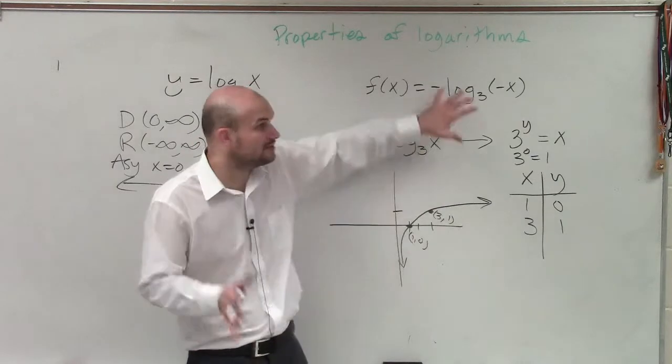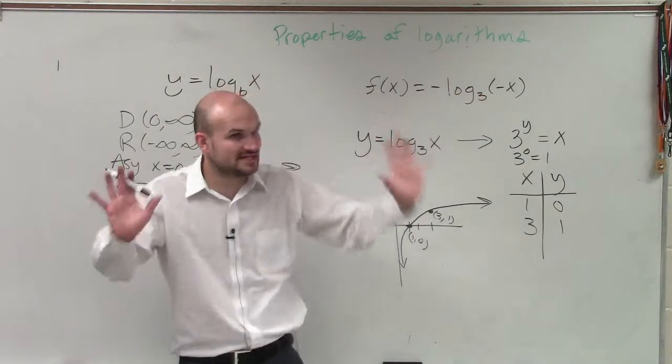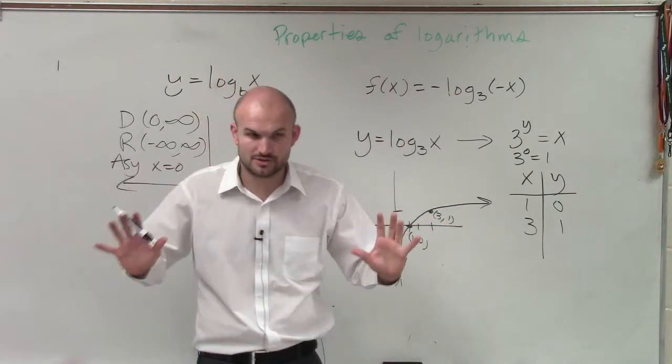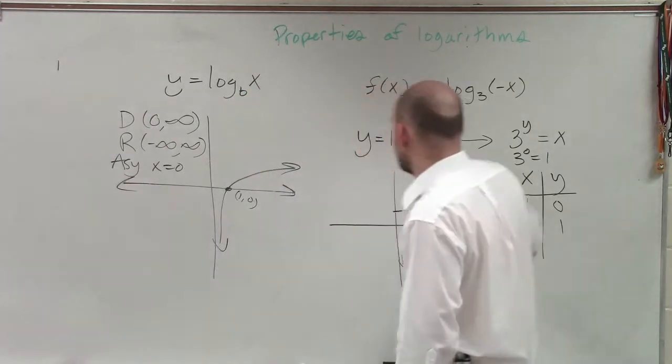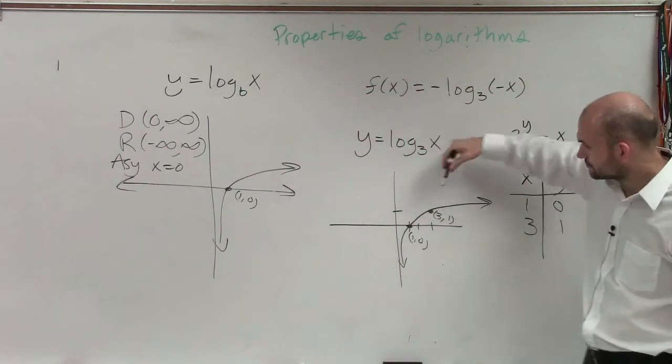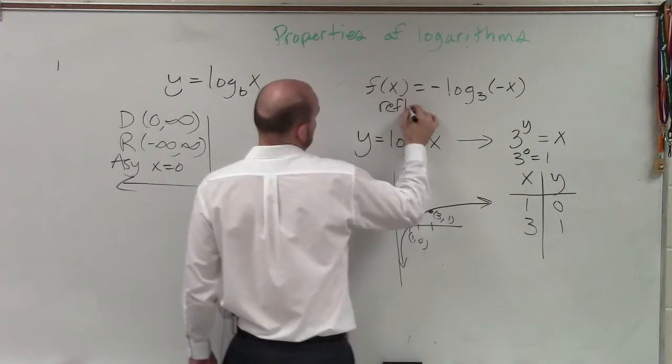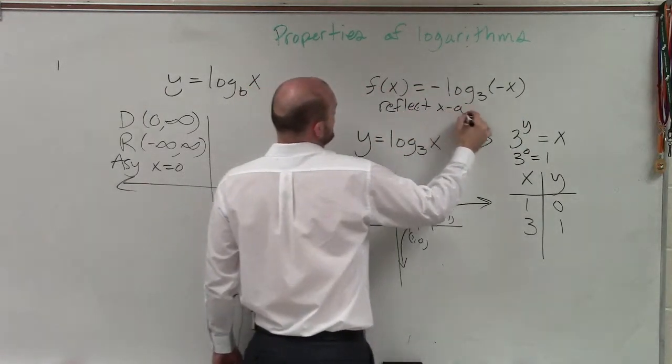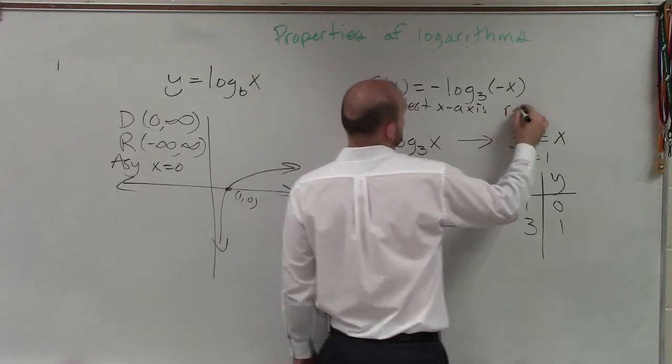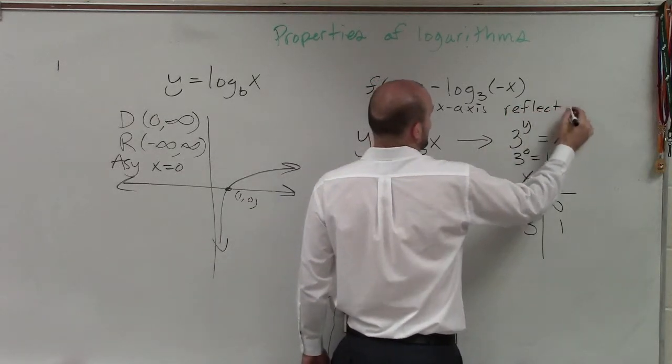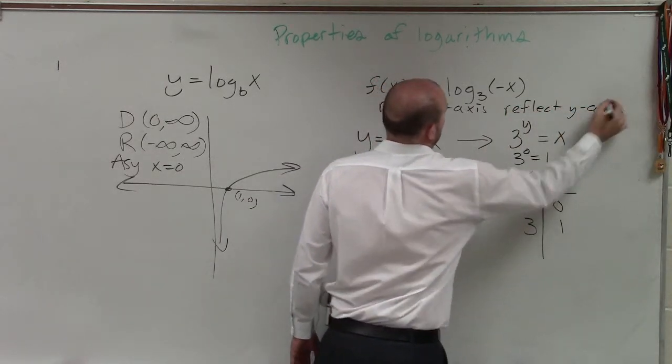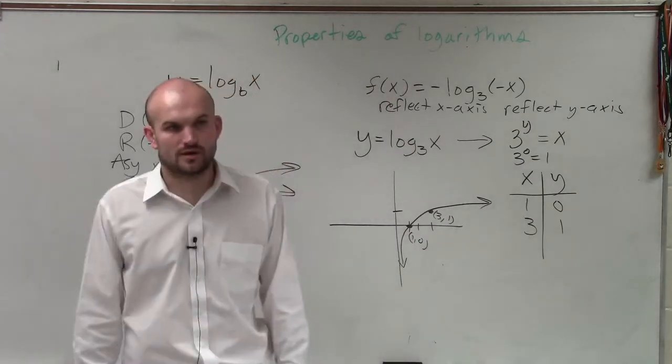All right? But if you want to use the table of values with all the transformations, that's fine. You can do it that way. There's nothing wrong with that. But now when you guys look at this, you have two reflections. I told you this is reflect the x-axis, this is reflect the y-axis. It doesn't matter which order you go.